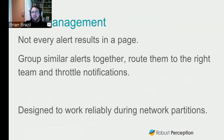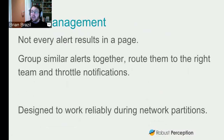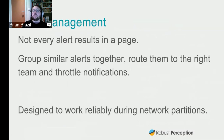Not every alert should necessarily result in a notification. If you had a rack failure with 100 machines, you don't want to receive 100 pages. So you can group alerts that are related and only get one alert for that rack failure, or route them to the right team and throttle notifications so you're not spamming someone every minute. The architecture is designed to work reliably during network partitions — even if your network is falling apart, Prometheus will do its utmost to make sure you get your notifications. You might get some duplicates, but that's better than getting nothing.